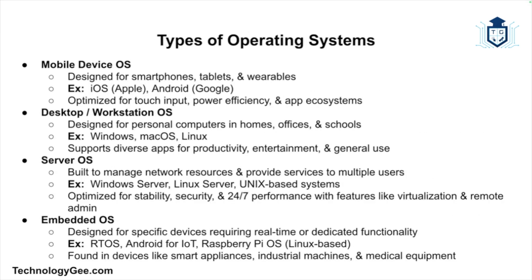Now let's talk about the different types of operating systems and their purposes. The first is a mobile device operating system, designed for smartphones, tablets, and wearable devices. Examples include iOS from Apple and Android from Google. Mobile operating systems are optimized for touch input, have power-saving features, and support application-based ecosystems.